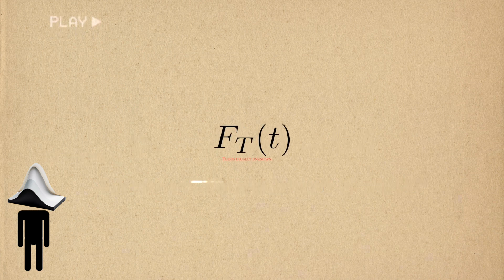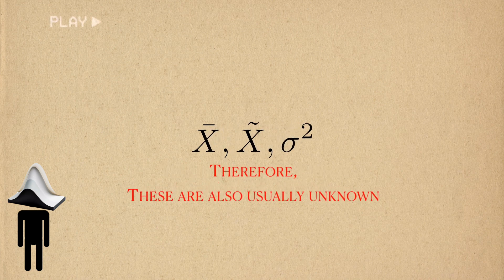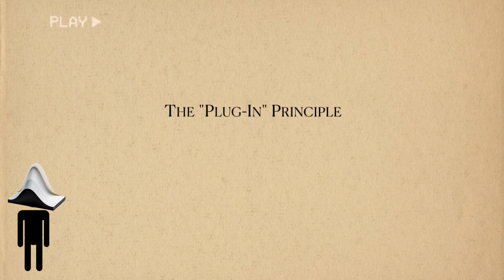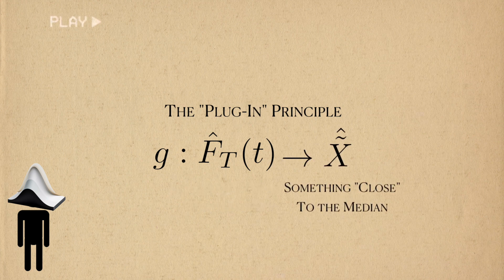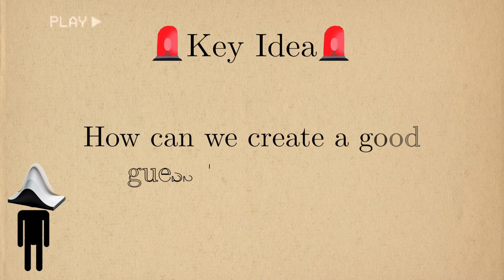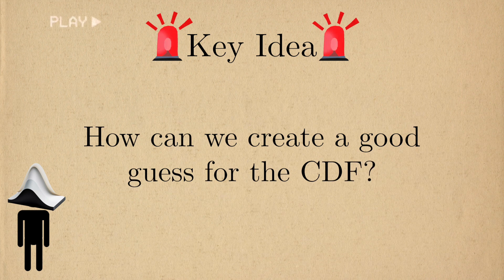In practice, we won't ever know the true CDF, so by extension, we won't ever be able to know values like the population mean. But there's this idea in statistics known as the plug-in principle. If I plug in an estimate for the CDF into the functional instead, I should get a good guess for the population value. Therefore, it's important that we find a good estimator for the CDF.